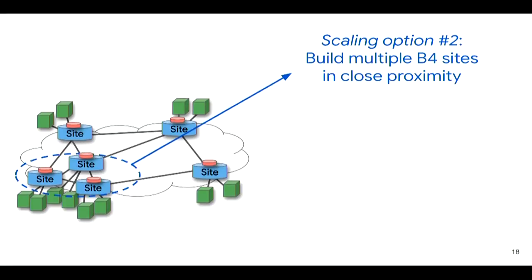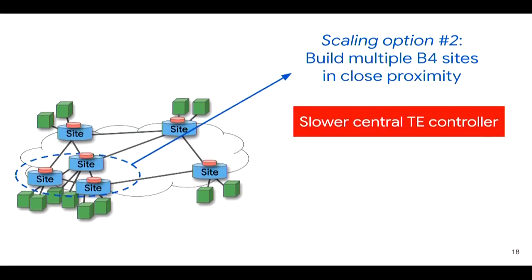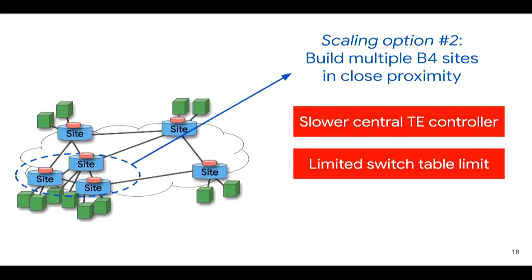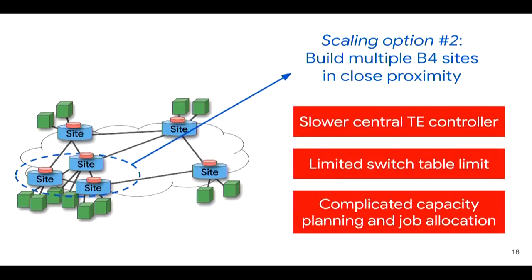As a conventional practice, we build multiple B4 sites in close proximity and distribute clusters between those sites within that proximity—called a B4 campus. However, this practice proved to be very bad, as it caused multiple challenges that only manifest at scale. First, it significantly slowed down the centralized TE controller, which operated at site-level topology abstraction. Second, we easily ran out of entries we can store in the switches, which imposes a hard table limit. Finally, this further complicated capacity planning and job allocation, as app developers had to understand potential network bottlenecks in the B4 backbone.